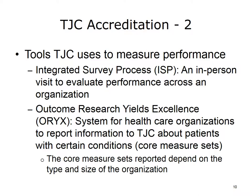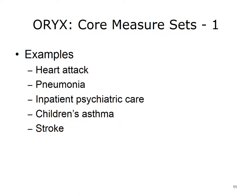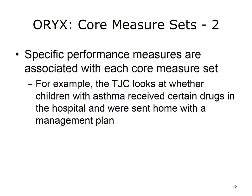ORIX is directly relevant to information technology professionals. Hospitals are required to collect and transmit data to TJC about patients with certain conditions. Treatments for these conditions are considered core measures of the healthcare organization's performance. A hospital might choose to provide data on conditions such as heart attack or acute myocardial infarction, pneumonia, psychiatric care, children's asthma, or stroke. For each condition, TJC requires the hospital to report on certain performance measures — for example, whether certain drugs were given and whether a child treated for asthma was sent home with a management plan.